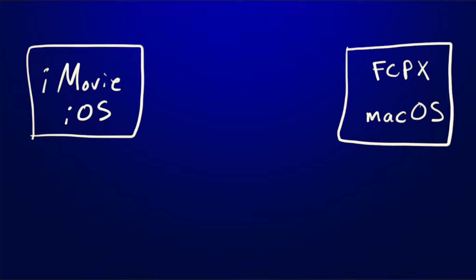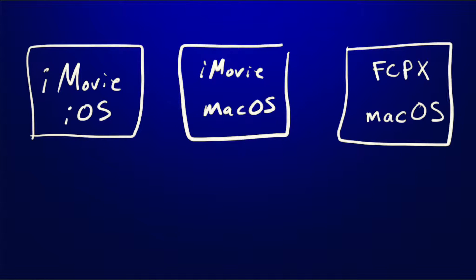Let's say you have an editing project in iMovie for iOS, either on your iPhone or iPad, and you want to transfer that project to Final Cut Pro X in macOS. How do you do this? How do you transfer or convert this over? In order to do this, you need to use iMovie for macOS as a bridge of sorts, sort of as a translator or converter.